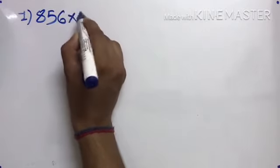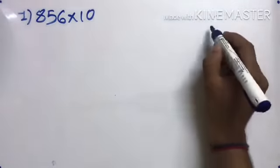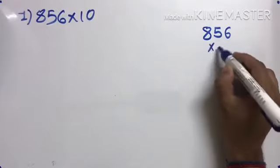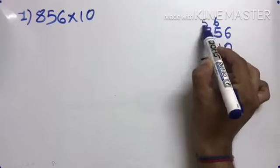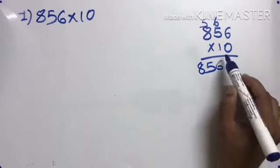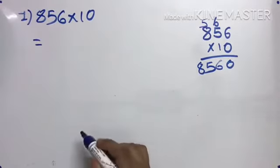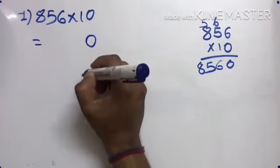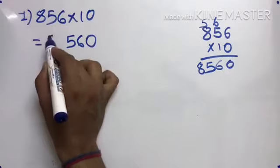856 multiply by 10. We can do it directly. 10 times 6 is 60, carry 6. 10 times 5 is 50 plus 6 is 56. 10 times 8 is 80 plus 5 is 85. Or if I have to multiply by 10, 100, 1000, I simply add the zeros. One zero, one zero at the last. 1 times 6 is 6, 1 times 5 is 5, 1 times 8 is 8.